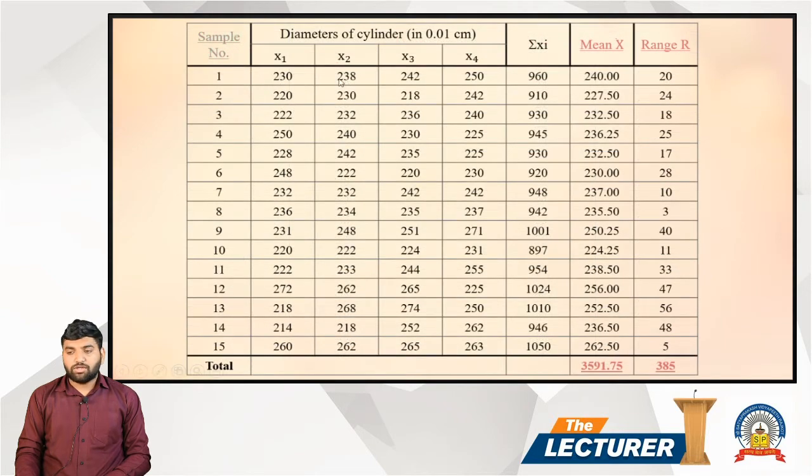For sample number 1, the four observations are: X1 = 2.30, X2 = 2.38, X3 = 2.42, X4 = 2.50. Now we calculate the mean and range for this sample.